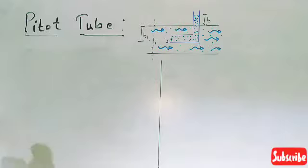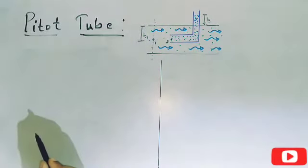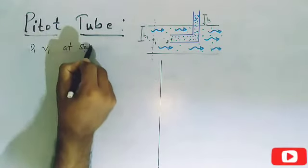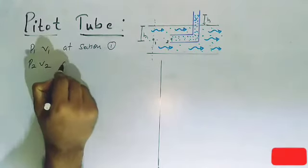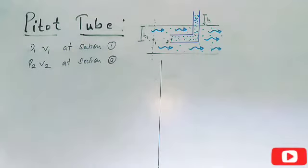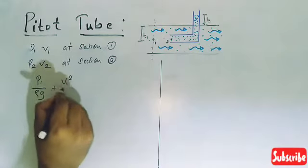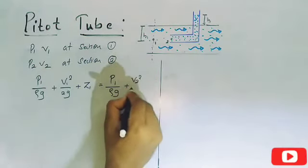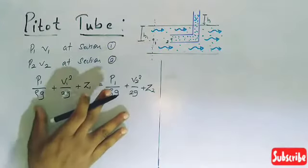Let us derive the velocity equation using a pitot tube. Consider section 1 at any particular point in the flow, and section 2 at the entry of the pitot tube. Let p1 and v1 be the pressure and velocity at section 1, and p2 and v2 be the pressure and velocity at section 2. By applying Bernoulli's principle at sections 1 and 2, we have: p1/ρg + v1²/2g + z1 = p2/ρg + v2²/2g + z2.